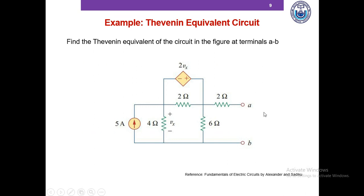Let's look at another example to further consolidate our understanding. We have to find the Thevenin equivalent at terminals A and B. To compute Vth, we compute Vab. To compute Rth, we look into the circuit and see there is a dependent source, so we can't just turn it off and compute equivalent resistance. Instead, we turn off the independent current source by replacing it with an open circuit, connect a 1V voltage source at terminals A and B, measure the current through that source, and take the ratio to find the Thevenin resistance.